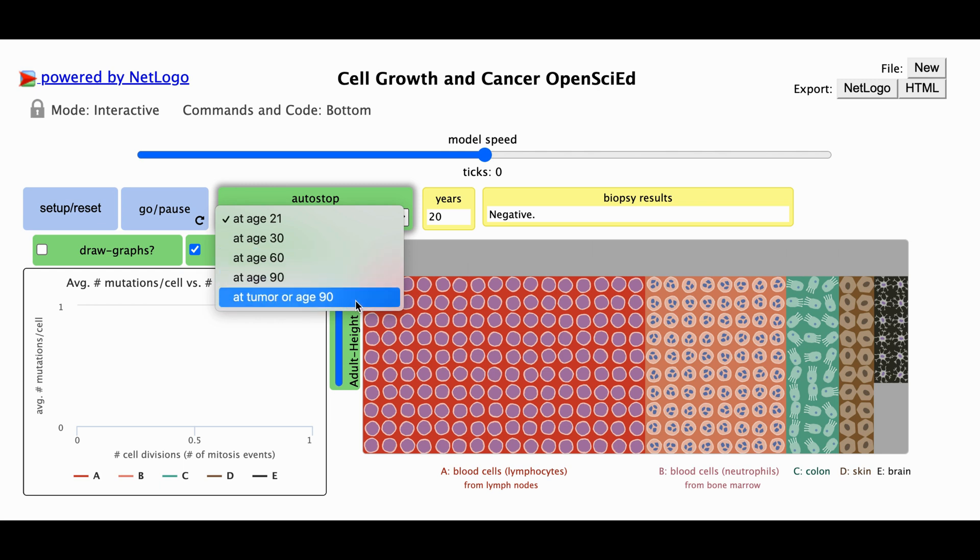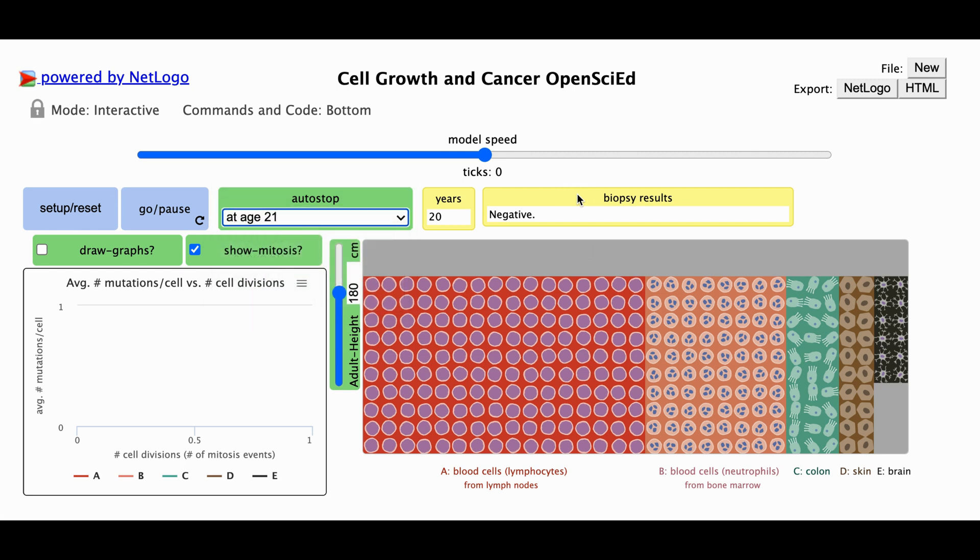Next to that, we have biopsy results. It currently says negative because our person does not have cancer. If the person develops cancer, our biopsy results will say positive and will tell us which type of cells developed the cancer.